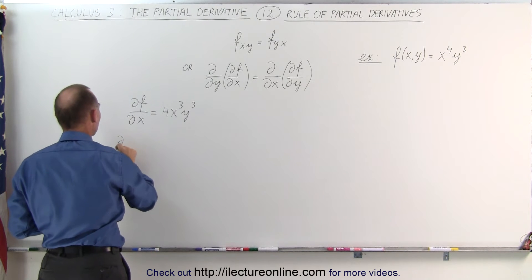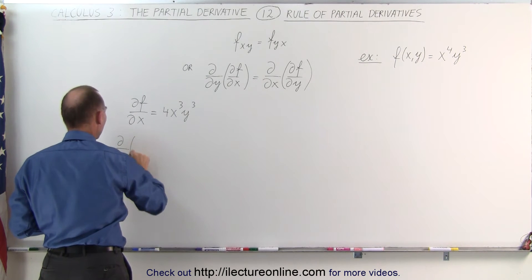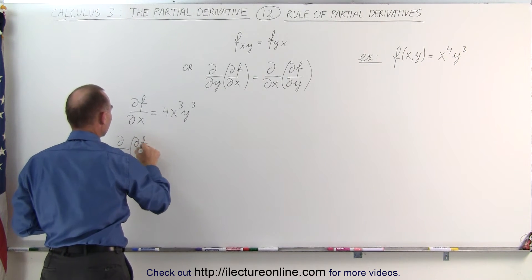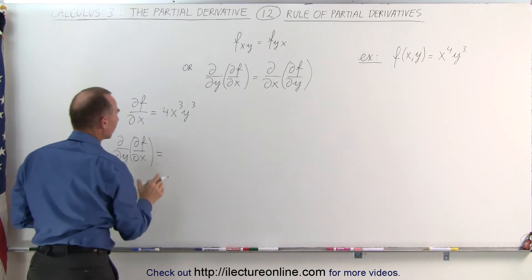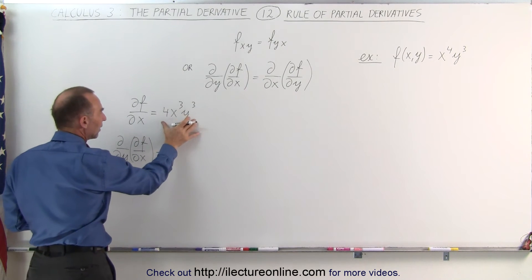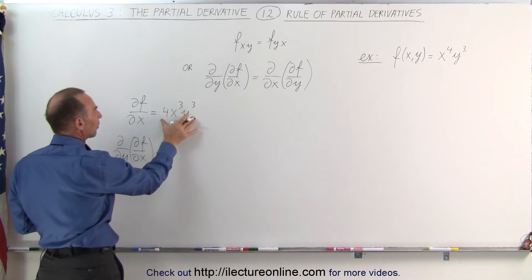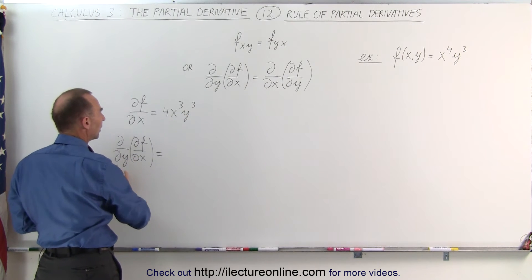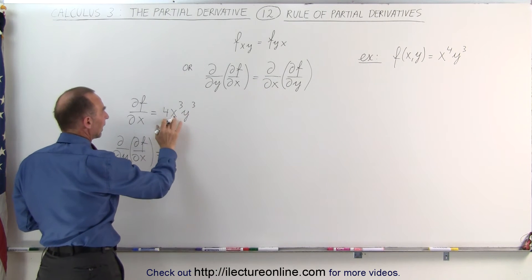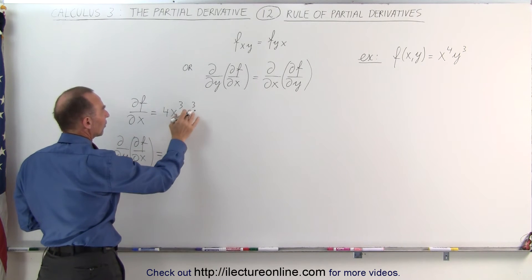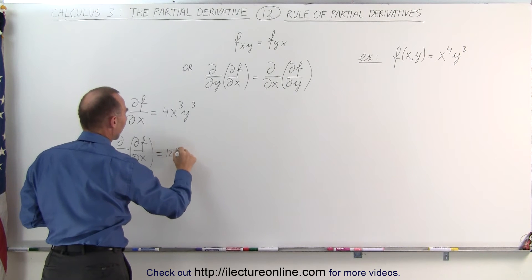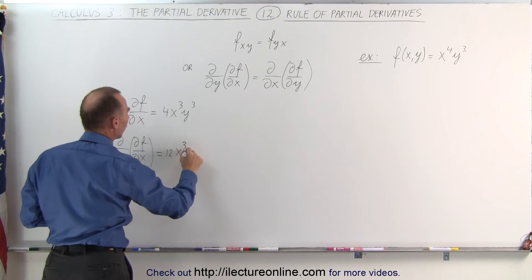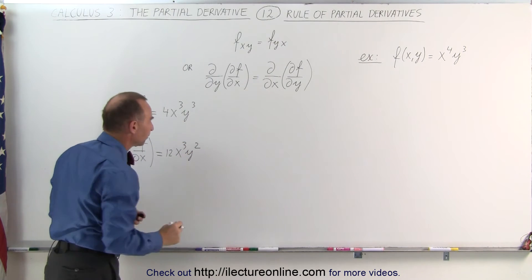So the partial with respect to y of the partial of the function with respect to x is equal to: we take the partial derivative of 4x cubed y cubed with respect to y. Then x becomes the constant, so it's 3 times 4, which is 12x cubed y to the 2nd power.